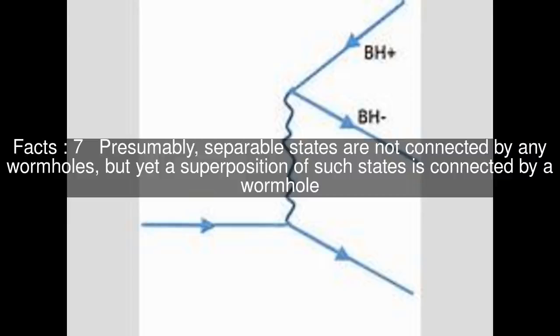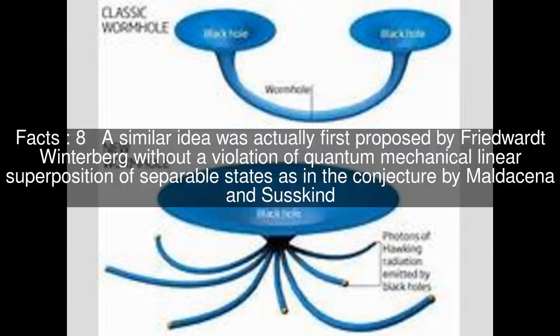Presumably, separable states are not connected by any wormholes, but yet a superposition of such states is connected by a wormhole. A similar idea was actually first proposed by Friedward Winterberg without a violation of quantum-mechanical linear superposition of separable states as in the conjecture by Maldacena and Susskind.